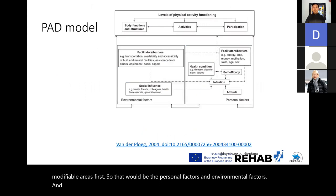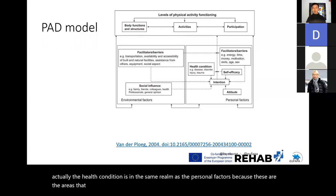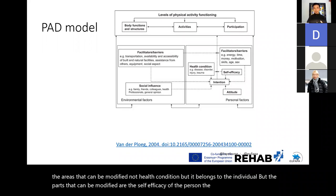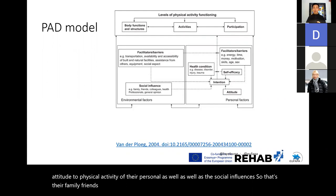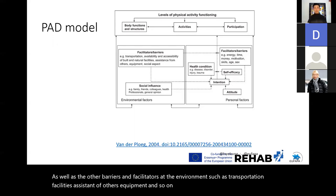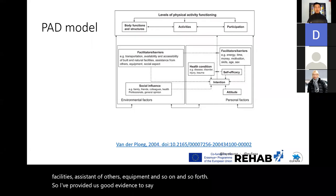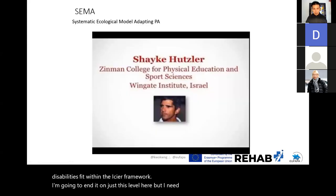From a recent literature review on this upside-down approach, the health condition is in the same realm as the personal factors — because these are the areas that can be modified. The parts that can be modified include the self-efficacy of the person, their intention, their attitude to physical activity, and social influences such as family, friends, colleagues, and health professionals. Other barriers and facilitators in the environment include transportation, facilities, assistance of others, and equipment. These provide good evidence that physical activity for people with disabilities fits within the ICF framework.